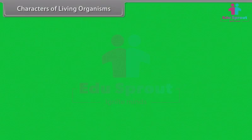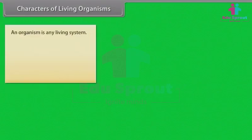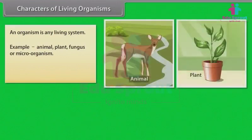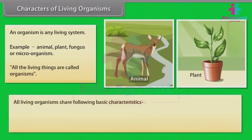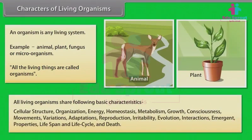An organism is any living system, for example animal, plant, fungus, or microorganism. All living organisms share following basic characteristics: cellular structure, organization, energy, homeostasis, metabolism, growth, consciousness, movements, variations, adaptations, reproduction, irritability, evolution, interactions,